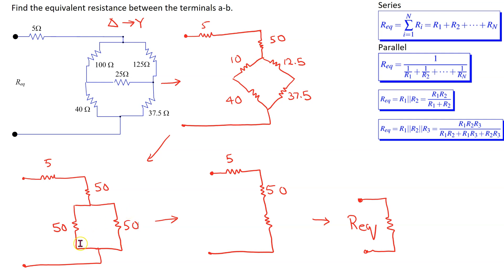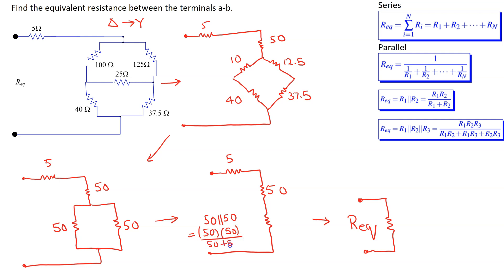These two equivalent resistors are in parallel. They are connected between the same nodes, so they have the same voltage across them. These two parallel resistors can be replaced by a single equivalent resistor: 50 parallel with 50, which equals 50 times 50 over 50 plus 50, giving a value of 25 ohms.